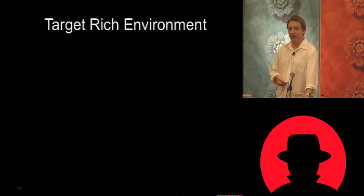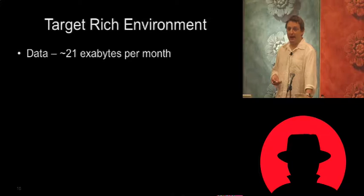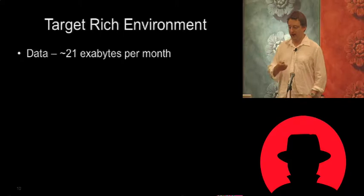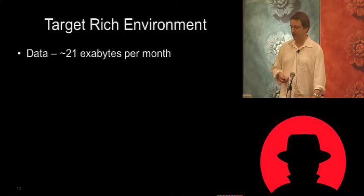A target-rich environment: a Cisco report stated there was something like 21 exabytes of data flowing around the world per month. The amount of personal information, photographs, and other data available is just exploding — you're getting more and more data from more and more people, which is pretty interesting if you like exploring data. Facebook was at 350 million users in the white paper, but was hitting around 500 million users before I got here.